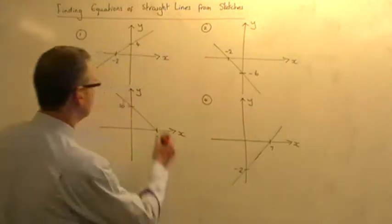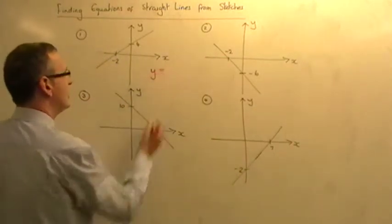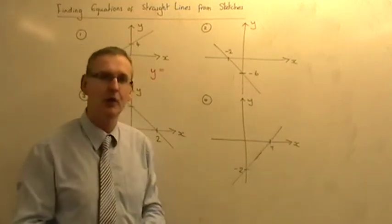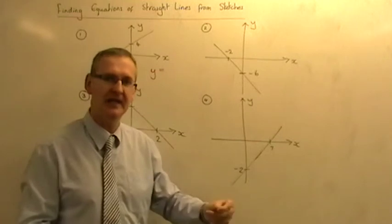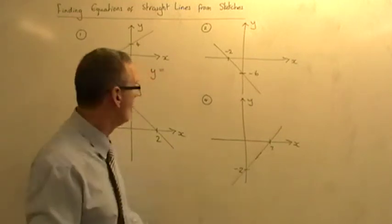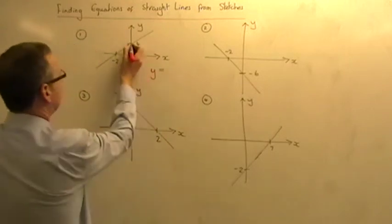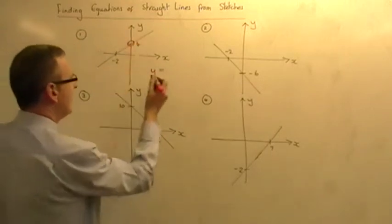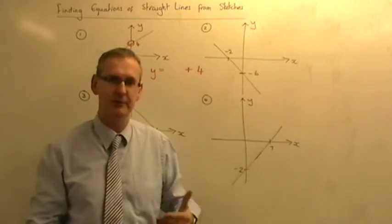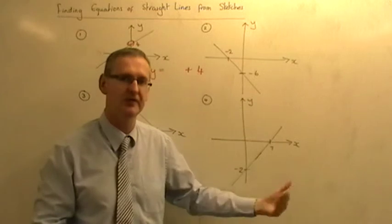In each case, these are diagonal lines, I know that the equation for this one here must be y equals something. What I need to do is work out how many x's I've got and what the number on the end of the equation is. Well, because it's crossing at plus 4 there, then I know the number on the end must be plus 4. So it's y equals so many x's plus 4.